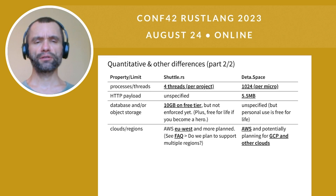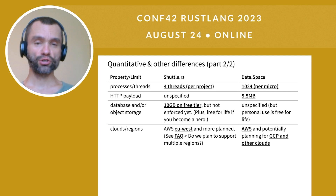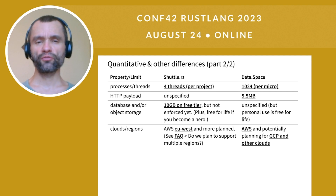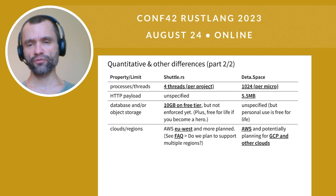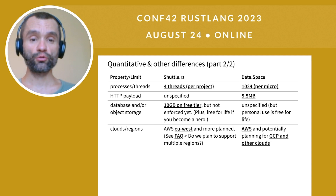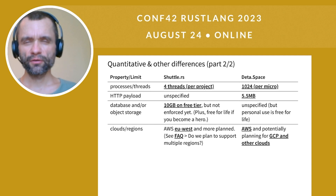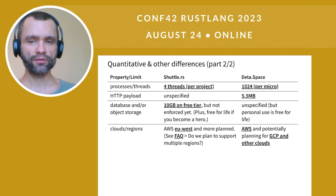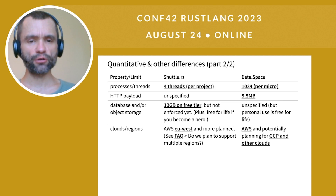If you need to handle more than 5.5 megabytes of HTTP payload, then at the moment you need Shuttle.rs. The storage limit on Shuttle.rs is 10 gigabytes on the free tier, but it's not enforced yet, and it's not specified on Deta.Space. They both use AWS, with Deta.Space also planning to use GCP or other clouds.